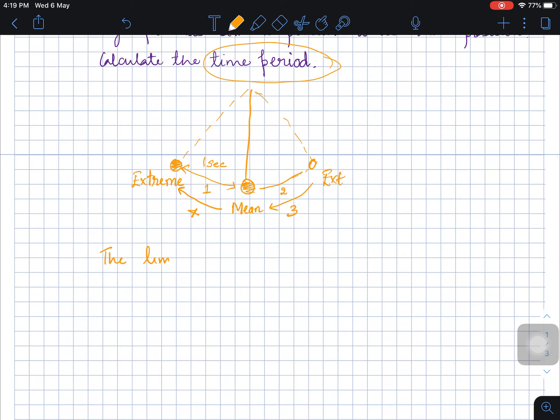So you will say the time required for bob to move from extreme end to mean end is equal to 1 second. So for one complete oscillation, for one complete oscillation,